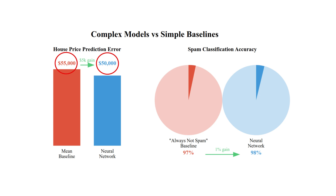Similarly, your spam classifier hitting 98% accuracy seems great until you discover that simply marking everything as not spam gets you 97% accuracy. In both cases, your sophisticated models are barely outperforming naive guesses, suggesting you need to rethink your approach.